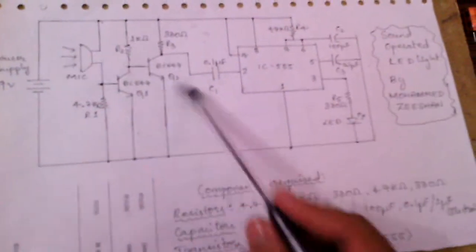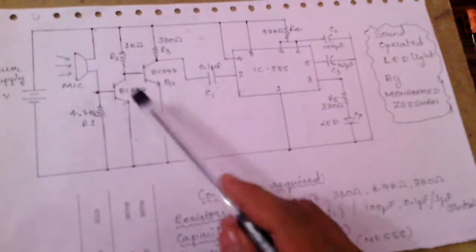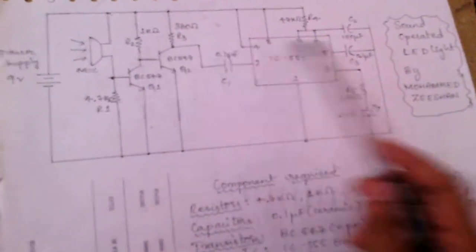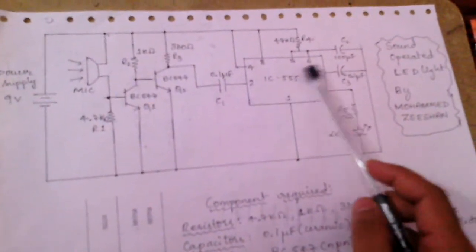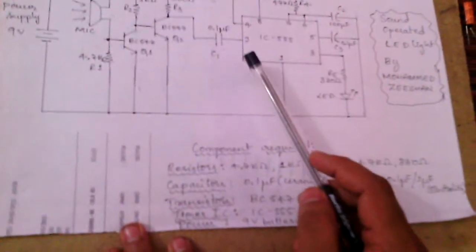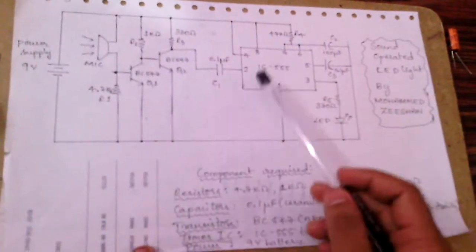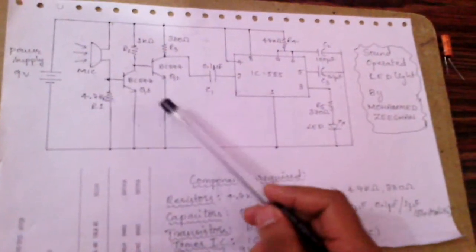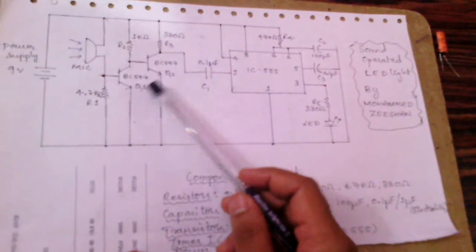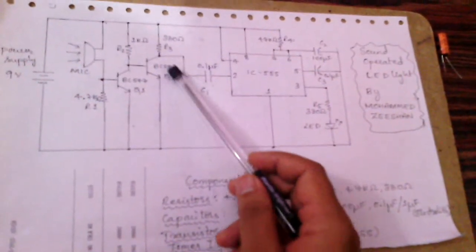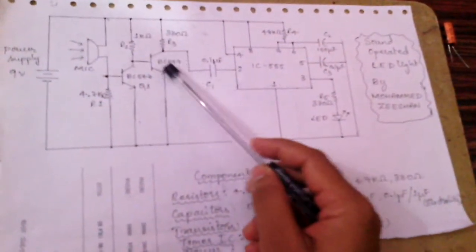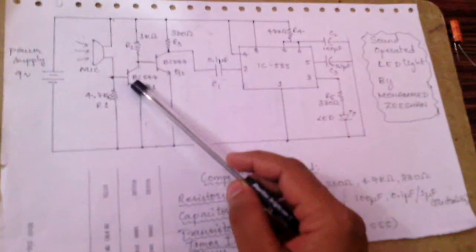This is the mic and these are the two transistors, and the main component is a 555 timer IC. We shall know the operation about the circuit. These two transistors act as amplifiers — this one is the amplifier and this one is the switch.